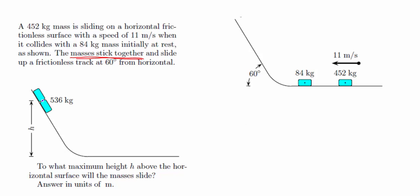A completely inelastic collision is when the two objects collide and stick together and move as one object. This is a problem that involves conservation of momentum and conservation of energy. We're going to use conservation of momentum to figure out the velocity of the two blocks right after they stick together, and then use conservation of energy to figure out how high they go up the hill.